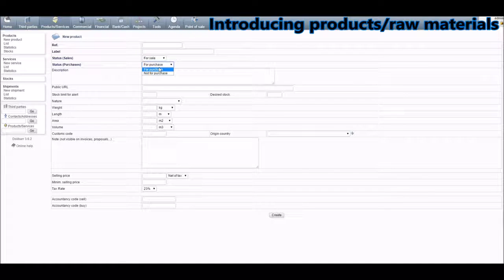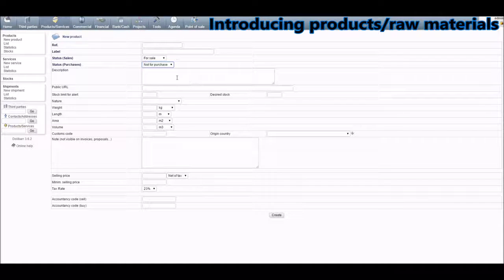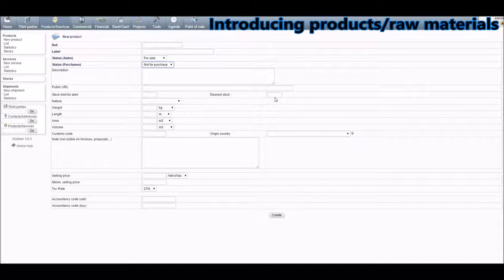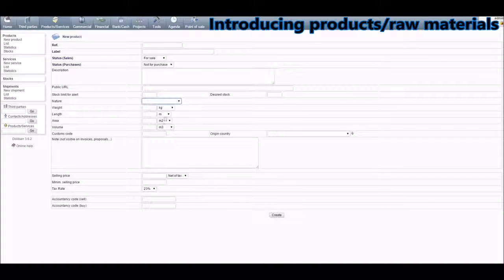Or if it is for purchase, it's a raw material. Then add the description, public URL, stock limit for alert, and desired stock. Also important is to add its nature — if it is a manufactured product or a raw material. Insert any notes that you want and then click on Create.